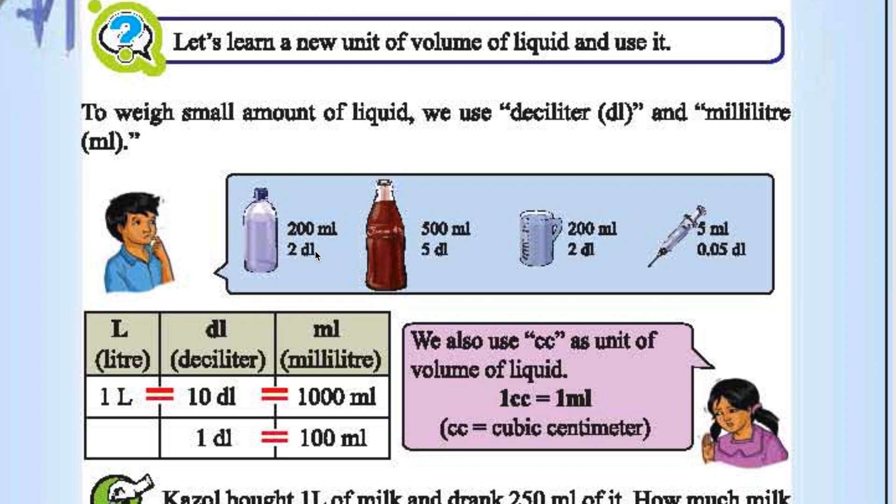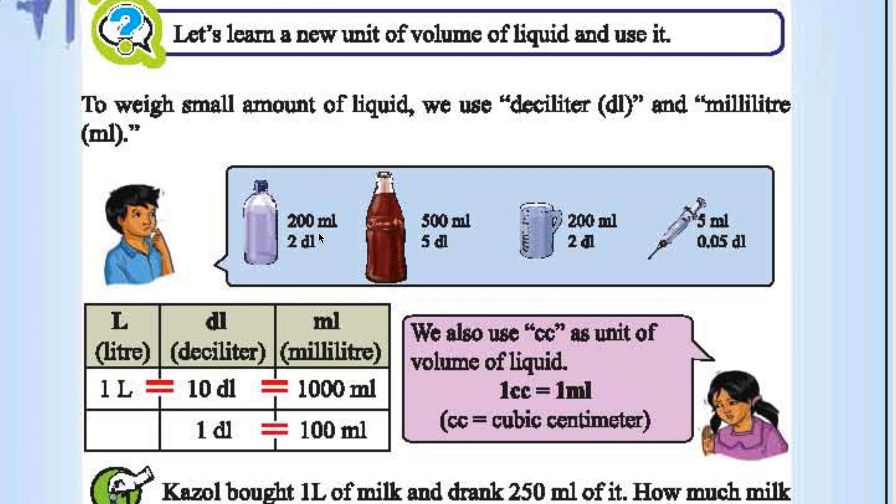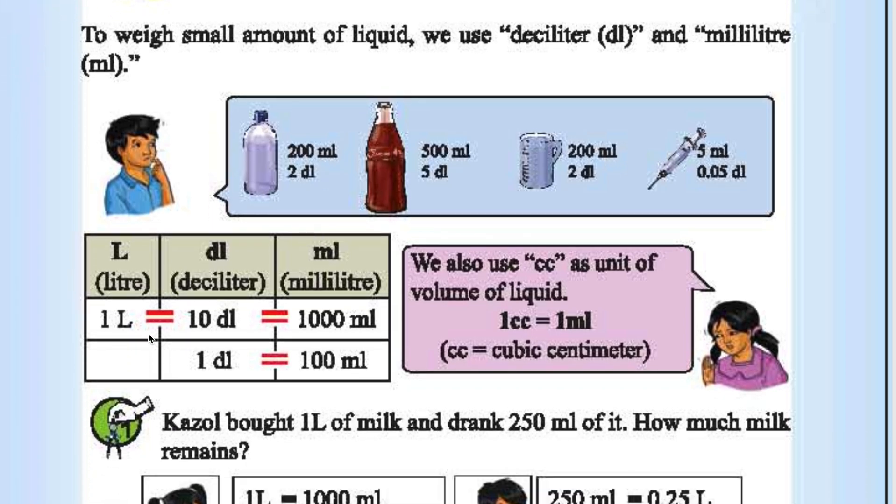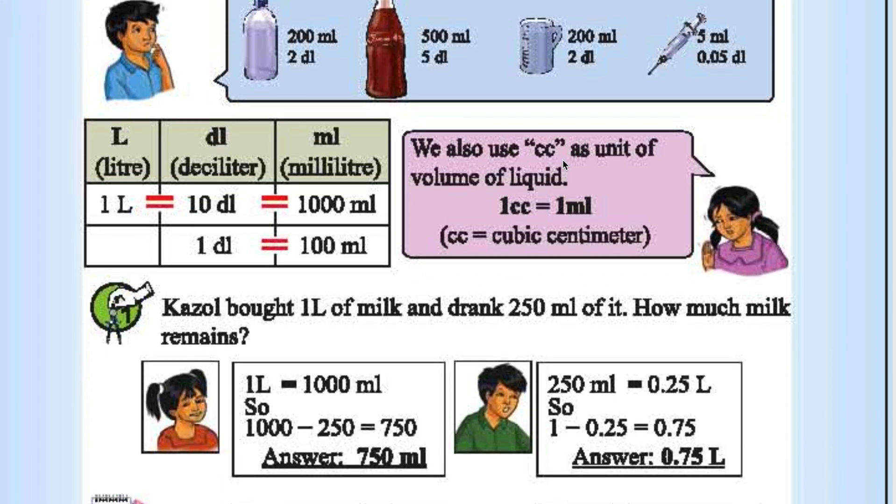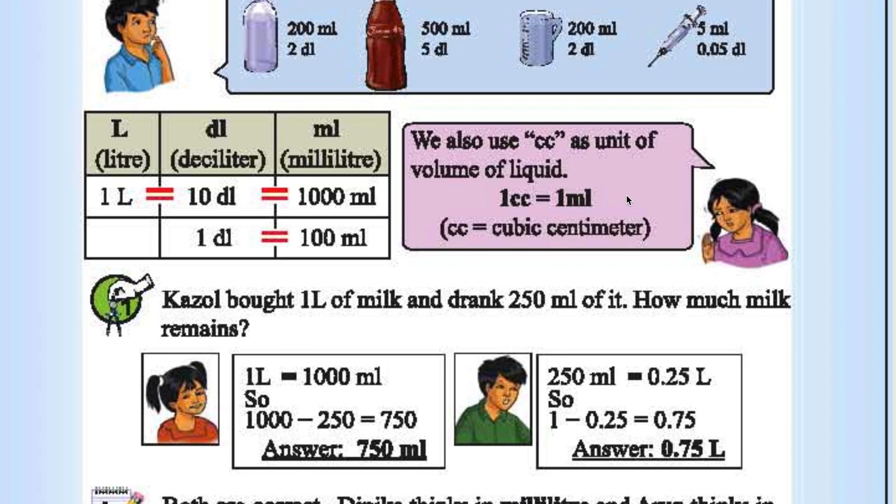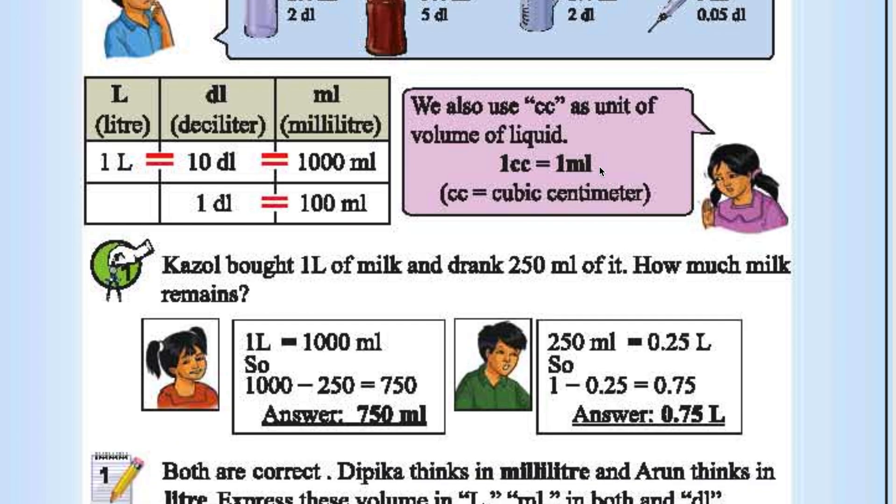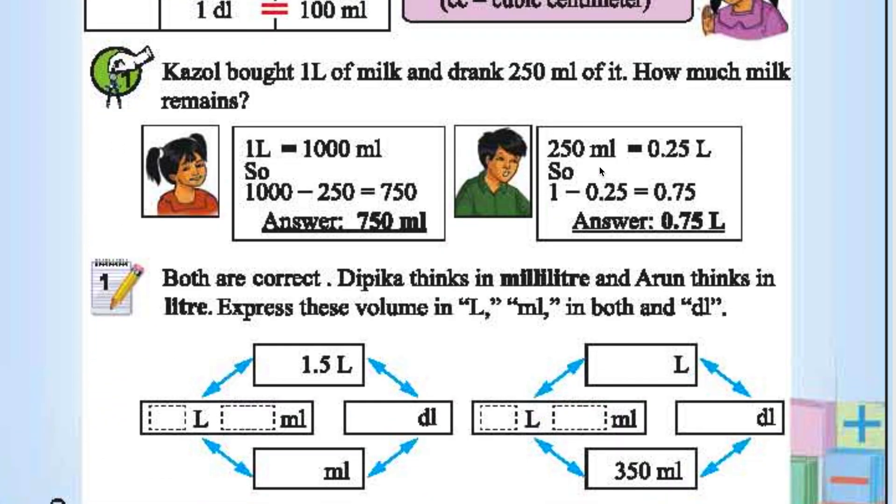So 1 deciliter is 100 milliliter. We also use CC as a unit of volume of liquid. CC is cubic centimeter. 1 CC equals 1 milliliter.